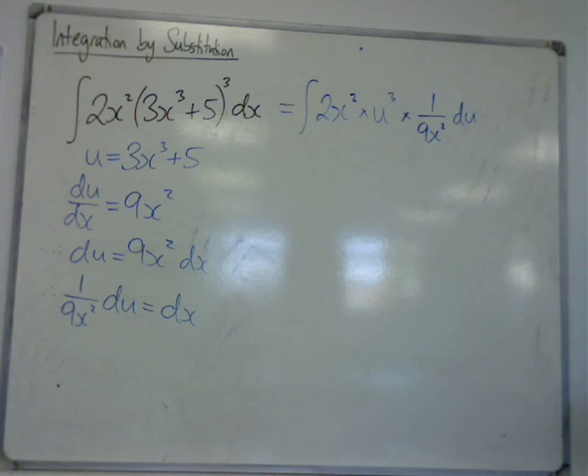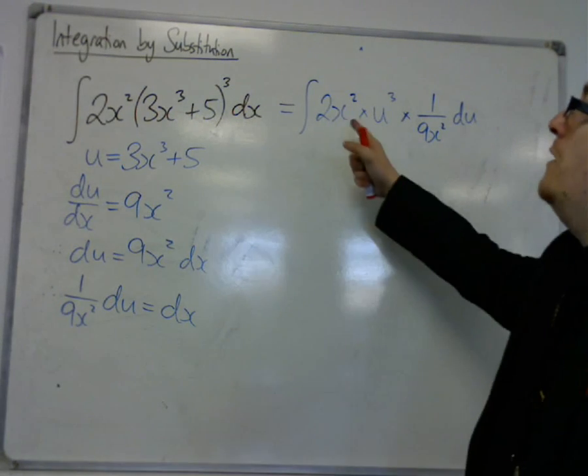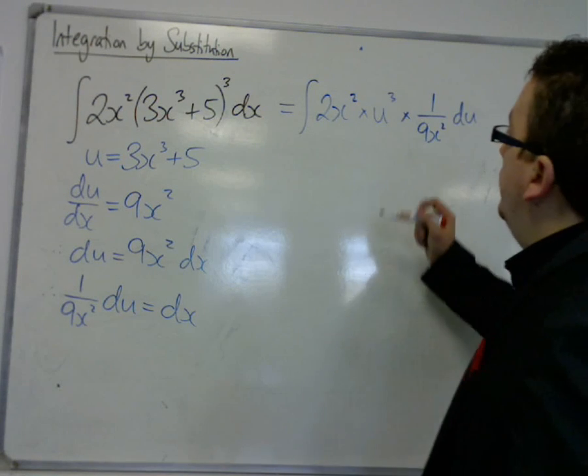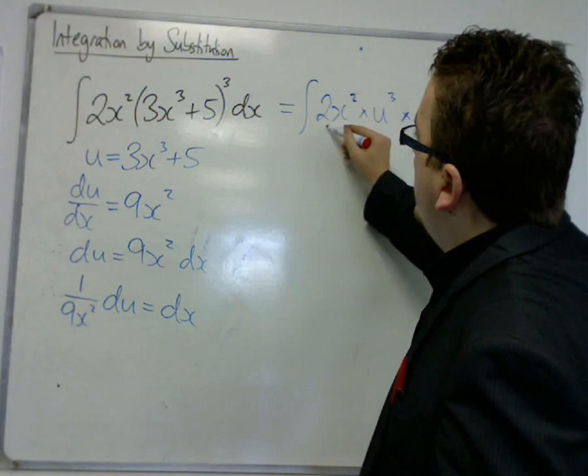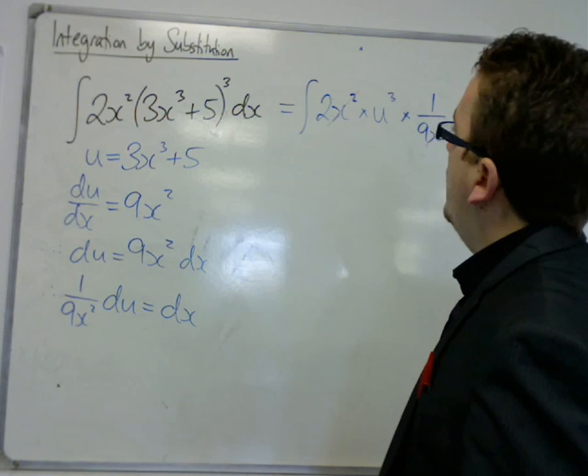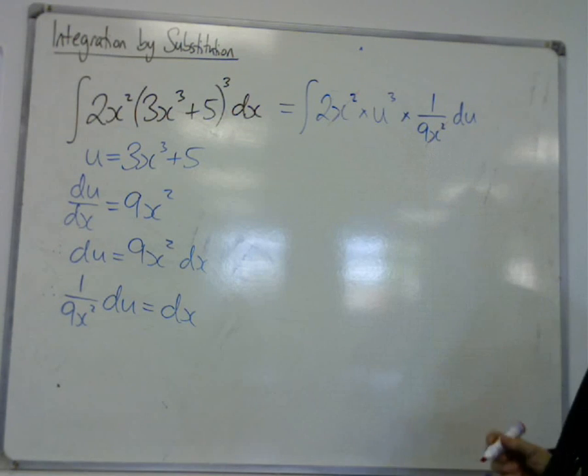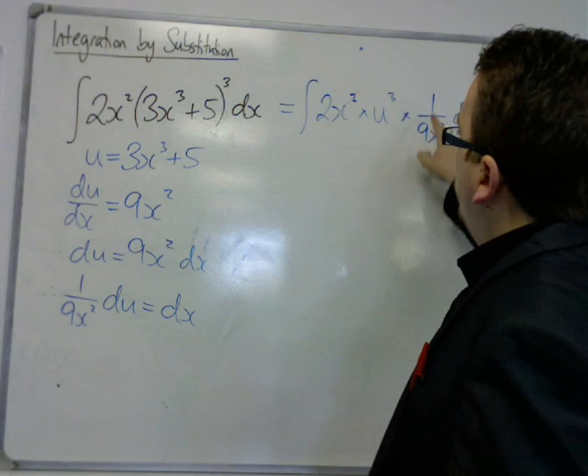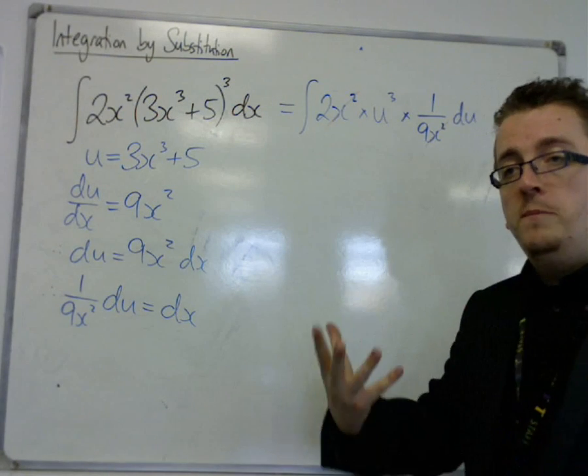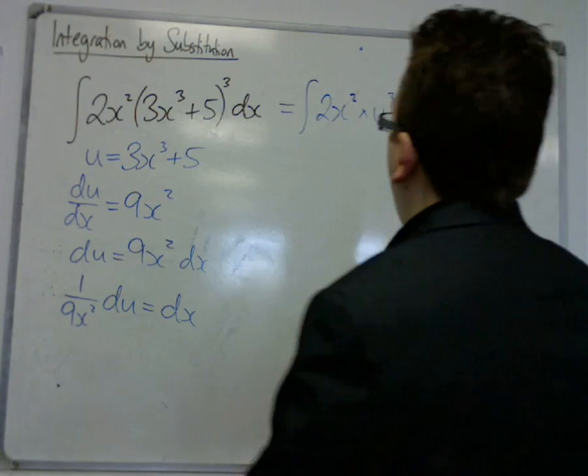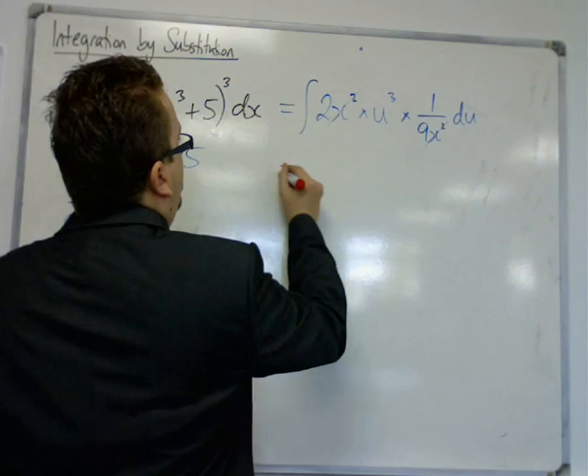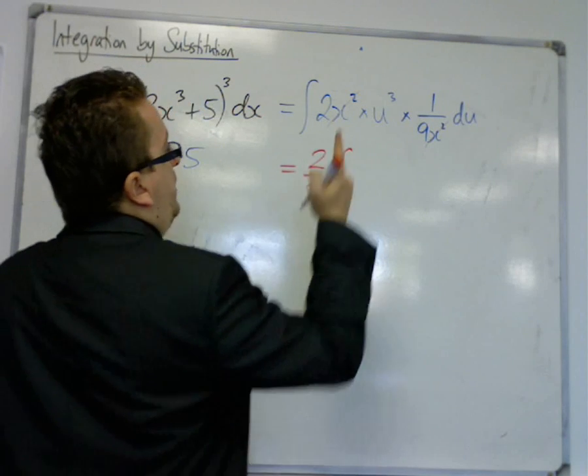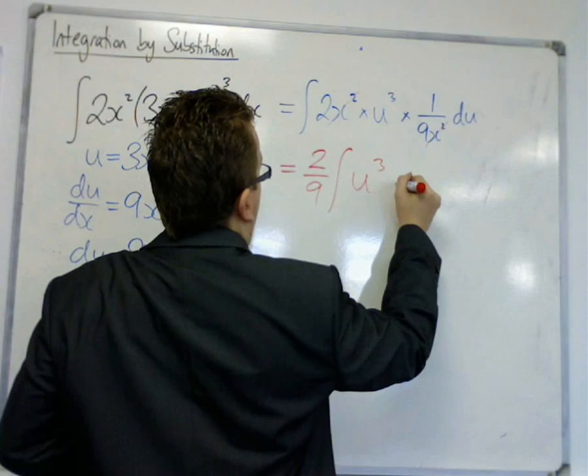So the integral is now 2x^2 times by u^3 times by 1/(9x^2) du. Now this looks particularly horrible. I don't have a replacement for the 2x^2, but what you should notice is that the x^2 here can get cancelled with that one. Because I've got x^2 divided by x^2, which makes 1. I've also got this 2 and this 1/9, which multiply to make 2/9. So 2/9 can be brought outside of the integral sign, leaving me with u^3 du inside.